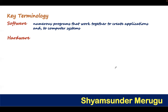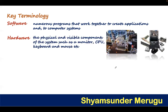Coming to hardware — the physical and visible components are generally called hardware. The meaning of hardware is that which cannot be easily changed or modified. If you want to bring any change in a particular mouse, it is not as easy as changing a particular program. So hence it is called hardware.